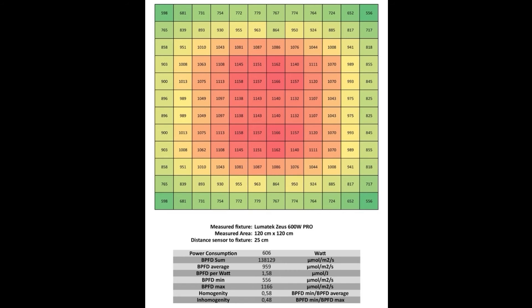The minimum value of the PPFD is 565 and is again in the upper right corner. The PPFD maximum is 1166, which is right at the center of the measurement. The homogeneity is 0.58 and the inhomogeneity is 0.48.